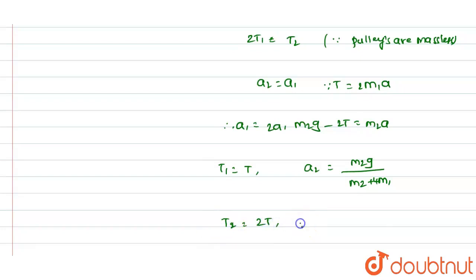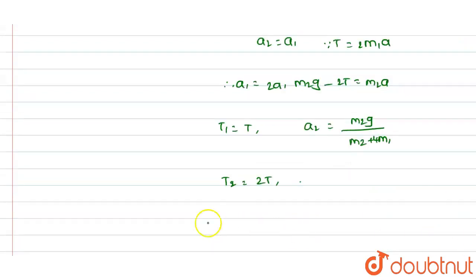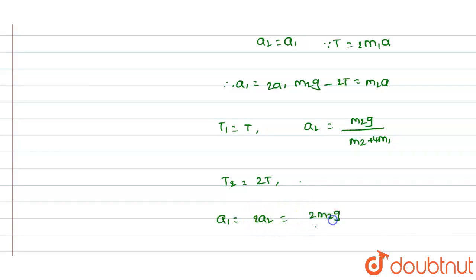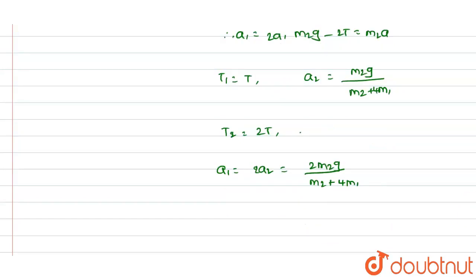Since T2 = 2T and a1 = 2a2, the value of a1 is 2 times a2, which gives a1 = 2m2·g / (m2 + 4m1). This is the final answer for the acceleration of block m1.